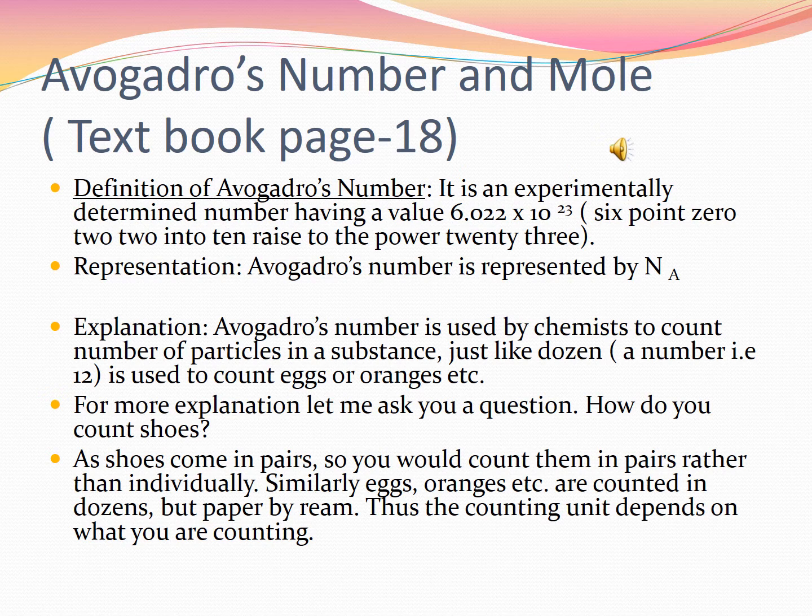First of all, let me tell you how Avogadro's number is defined. Avogadro's number is an experimentally determined number having a value 6.022 × 10²³. Avogadro's number is represented by the symbol NA — that is capital N and capital A.